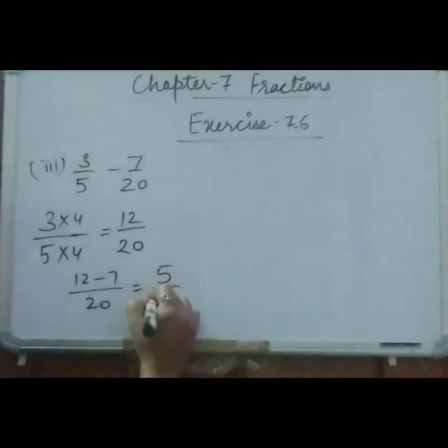So it is 5 by 20. If it is simplified, you will simplify also. This answer is 1 upon 5.